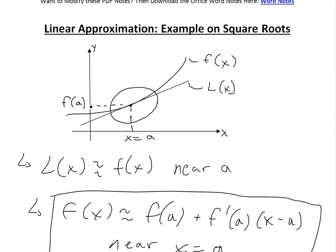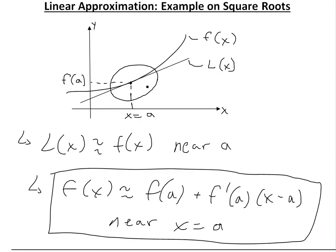If you have a function f(x) and you want to approximate it near a value, let's say x equals a, all you need to do is basically draw a tangent line, find the derivative or the slope at that point, and then approximate by linearizing this function near a. So we could approximate f(x) using the linear function L(x) near a.